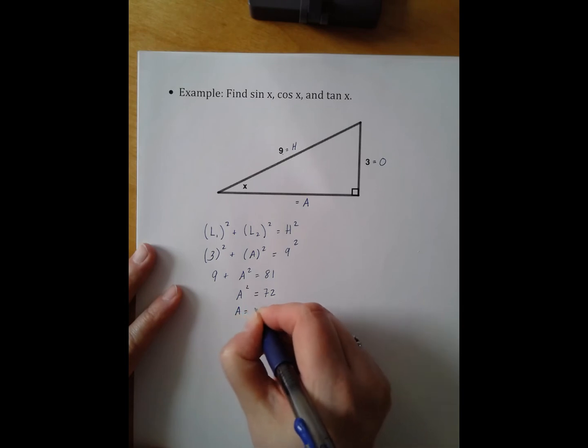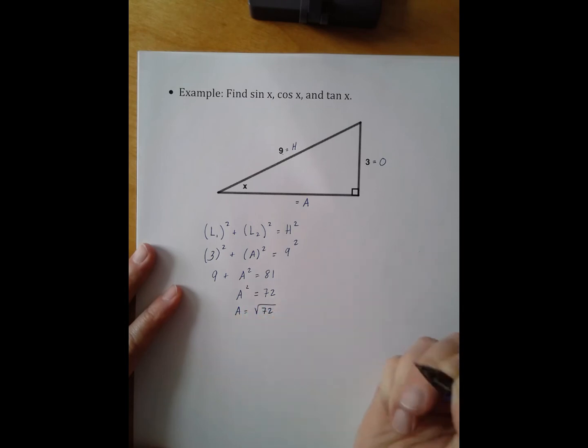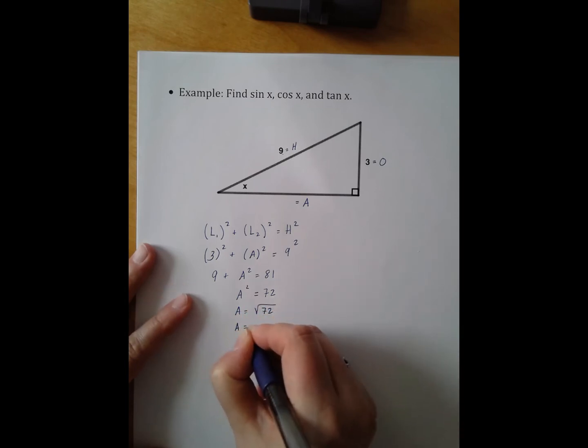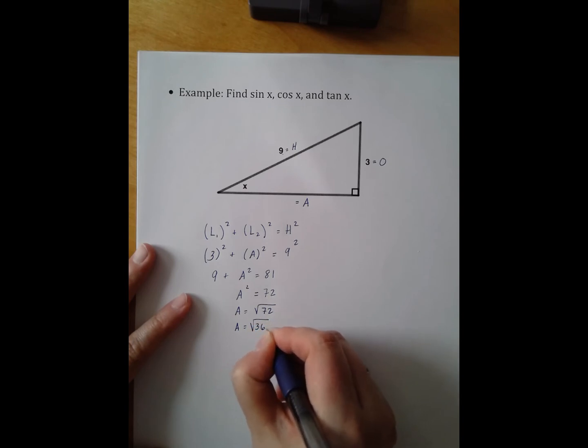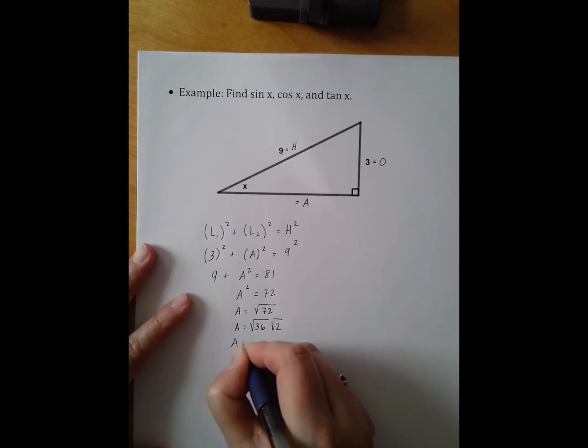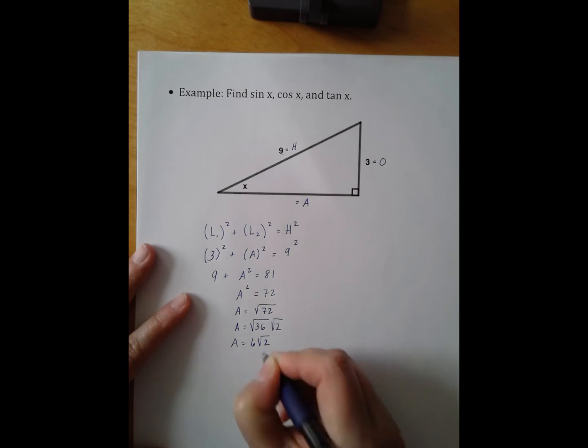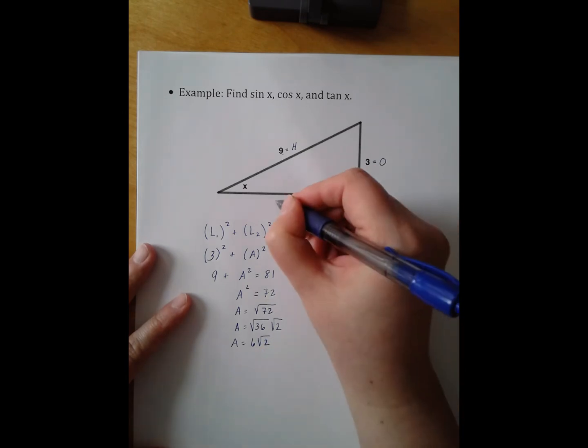So A equals the square root of 72, which I can simplify to be the square root of 36 times the square root of 2. Six square root of 2. So I now can add that in right here. Six square root of 2.